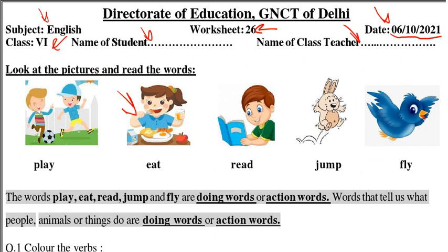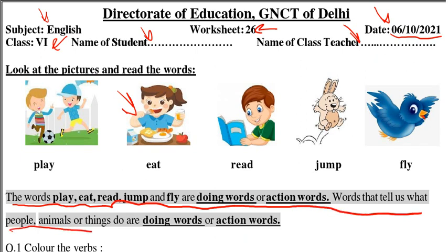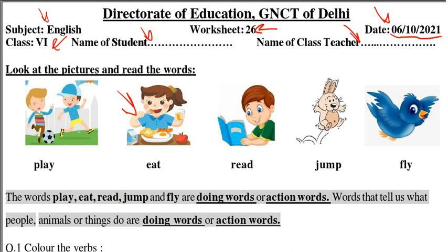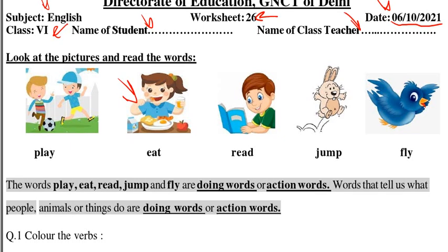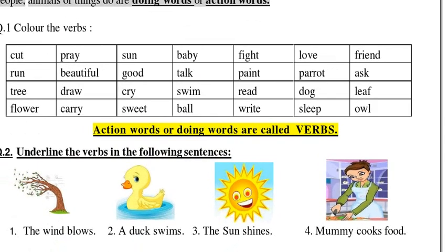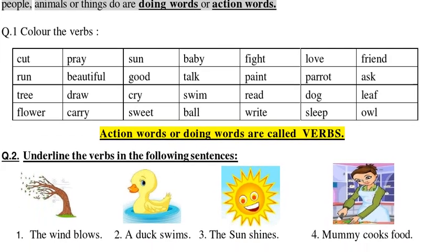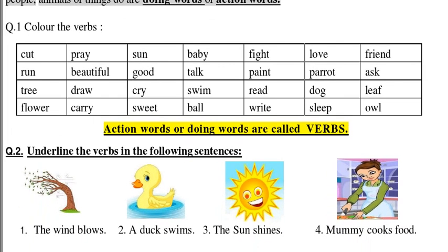The words play, eat, read, jump, and fly are doing words or action words. Words that tell us what people, animals, or things do are called doing words or action words. The words that tell us what the subject — the person or thing we are talking about — is doing or performing, those words are known as doing words, action words, or verbs.